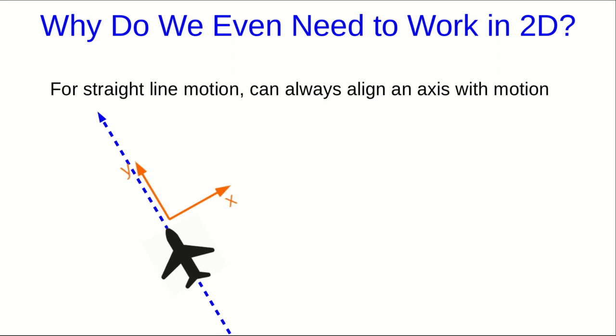But suppose there's a second airplane. No matter which way you choose your axes, you're going to have to describe the motion of at least one of these airplanes in two dimensions. This just illustrates that for motion in a straight line, there are still situations where it's inconvenient or impossible to align our axes with the motion.